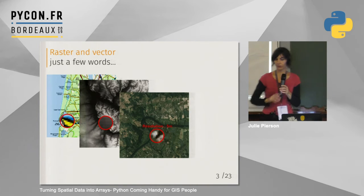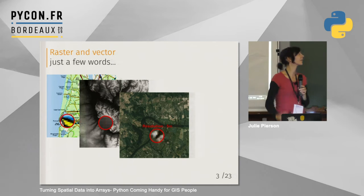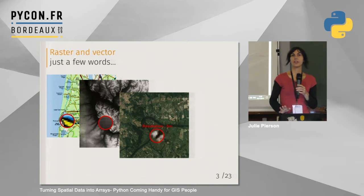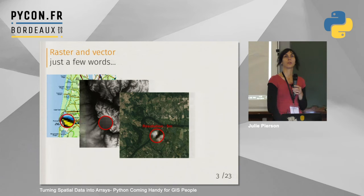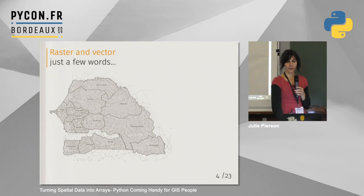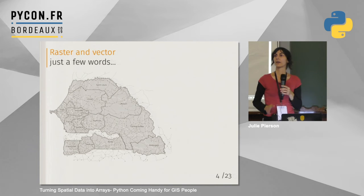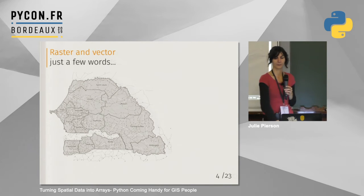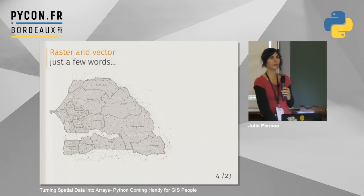Just a few words before beginning about the difference between raster data and vector data — it will be useful later on. Raster data is a picture; if you zoom in, you can see pixels. The size of the pixels is called resolution. For example, JPG or PNG are raster formats. Vector data can be points, lines, polygons, and they are defined by coordinates. If you zoom in, you won't see pixels. For example, SVG is a vector format.